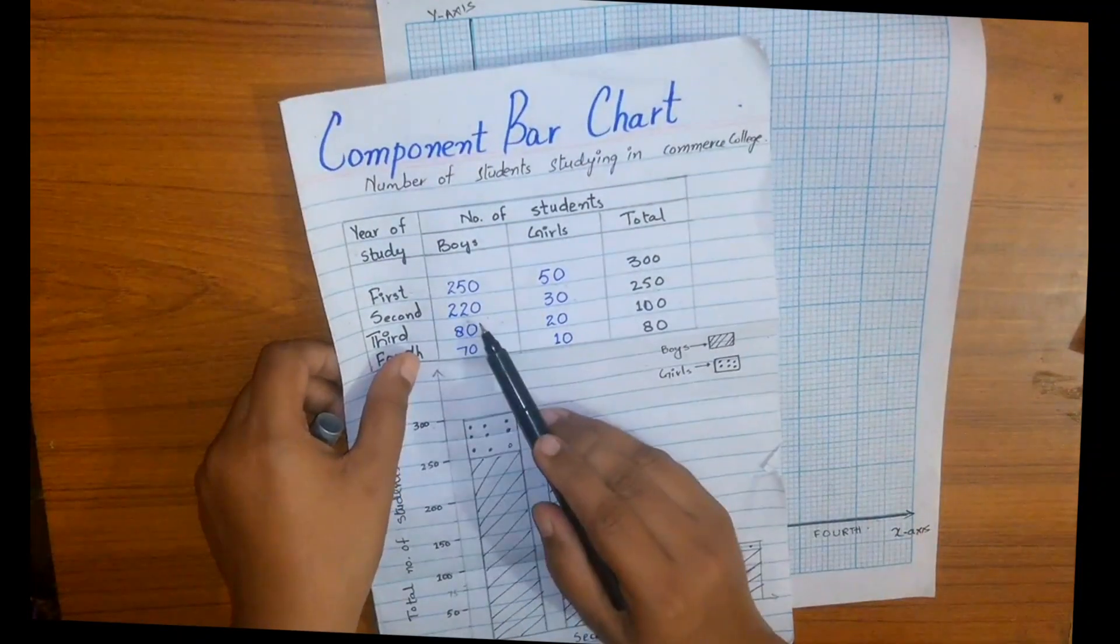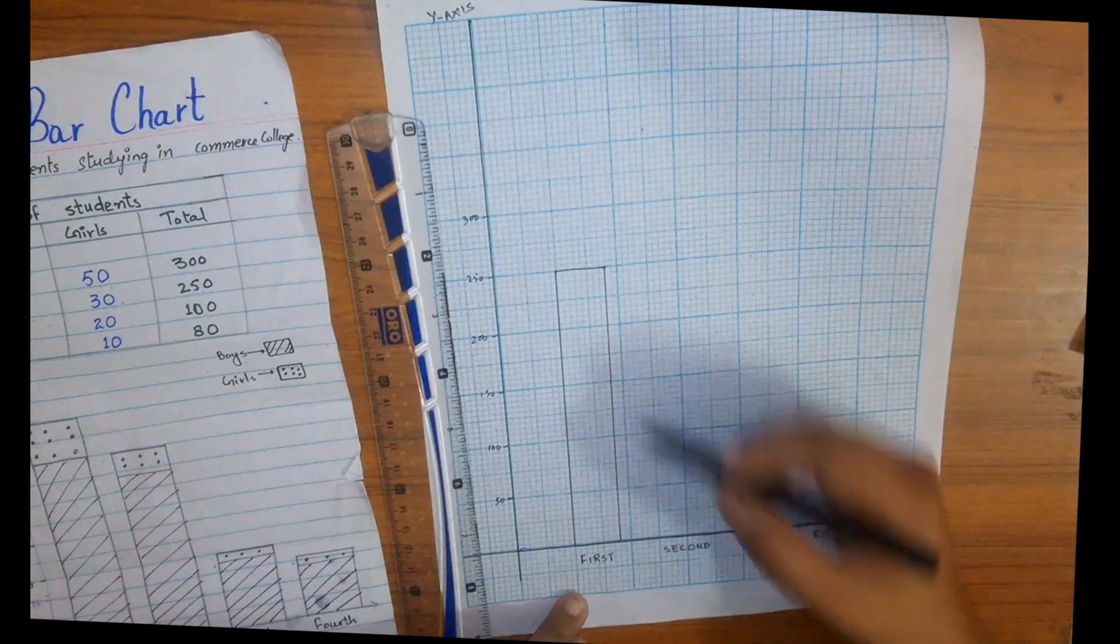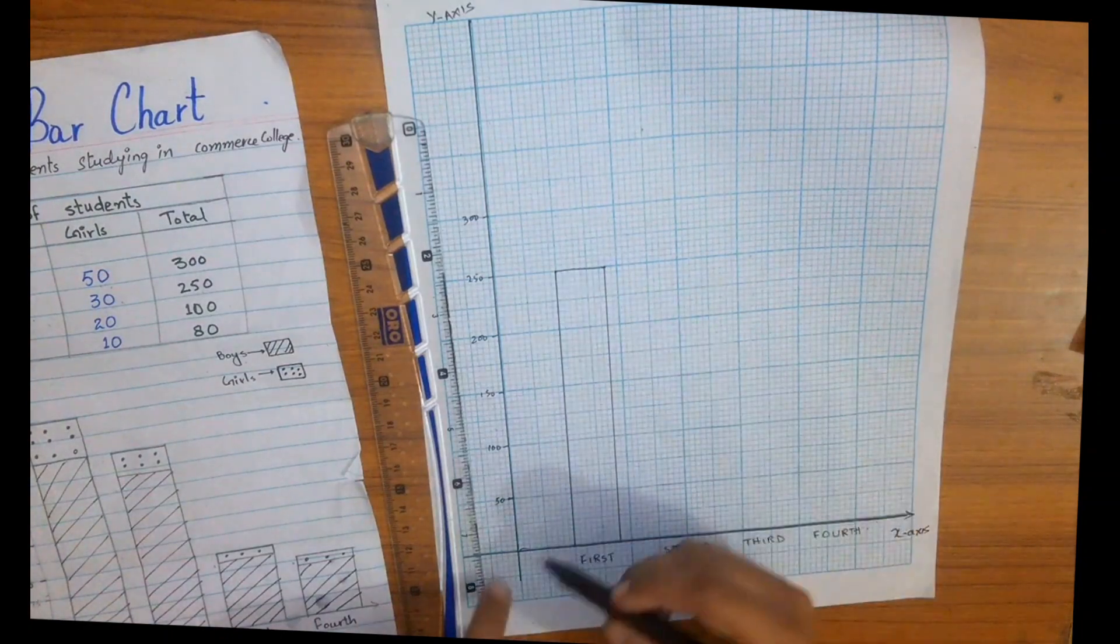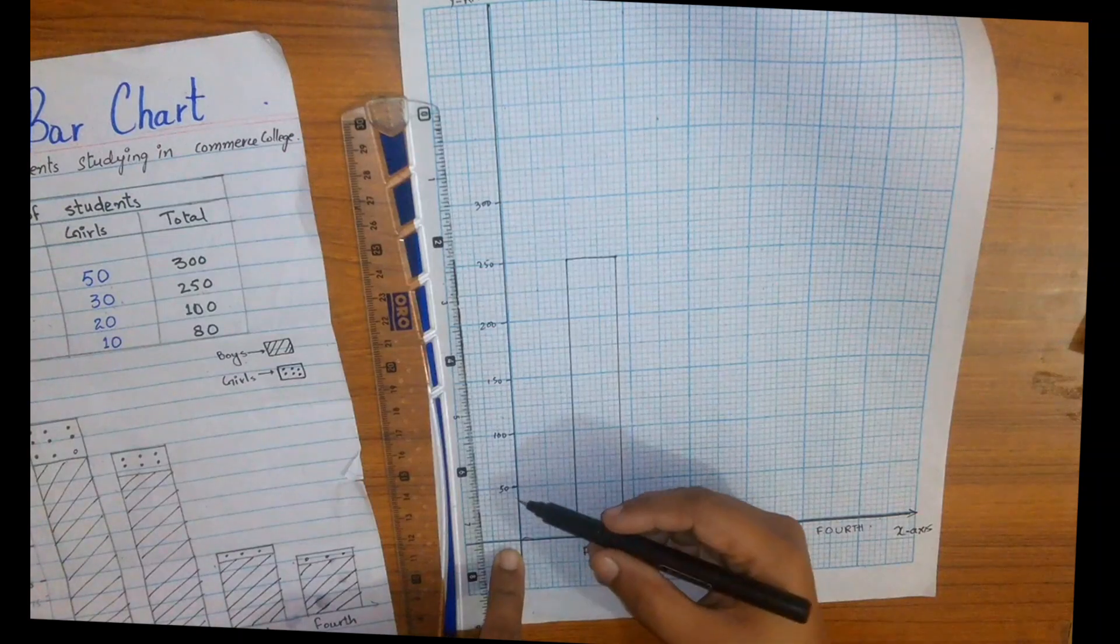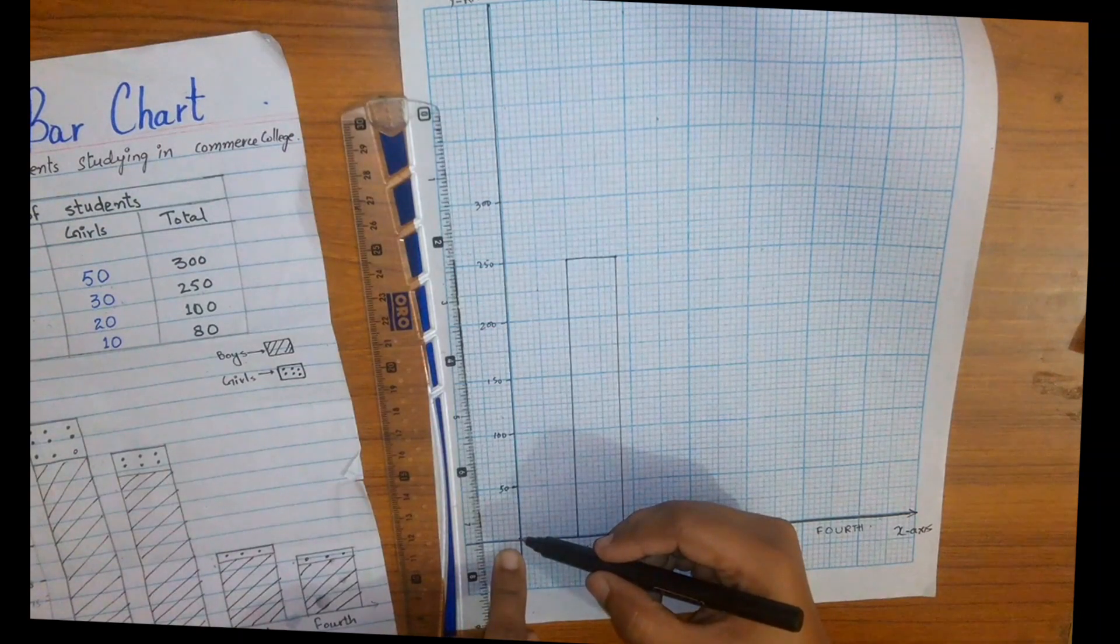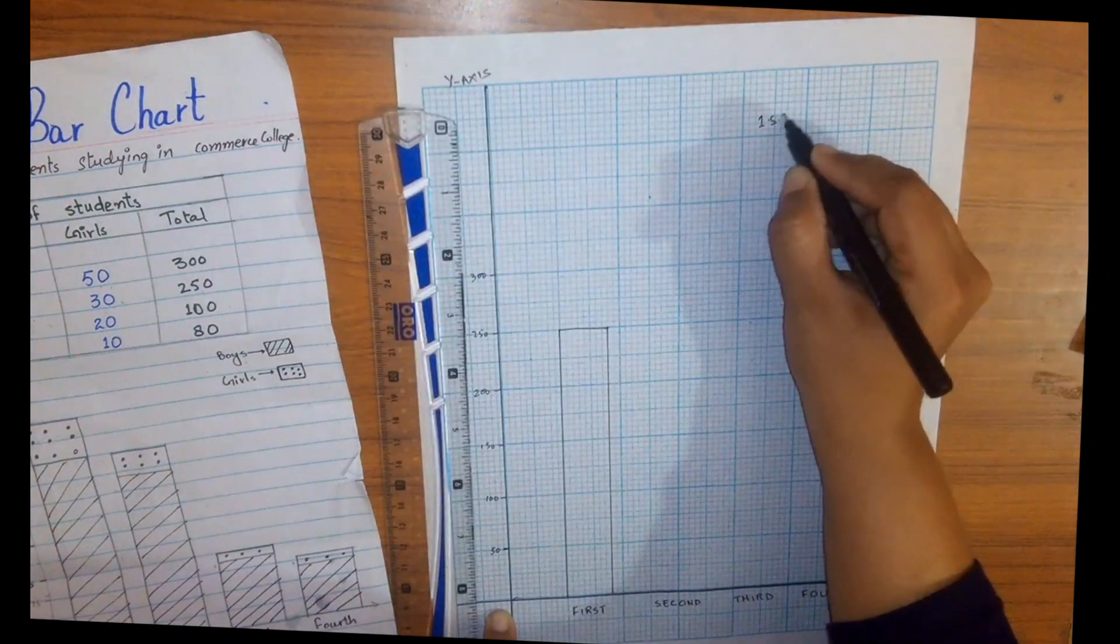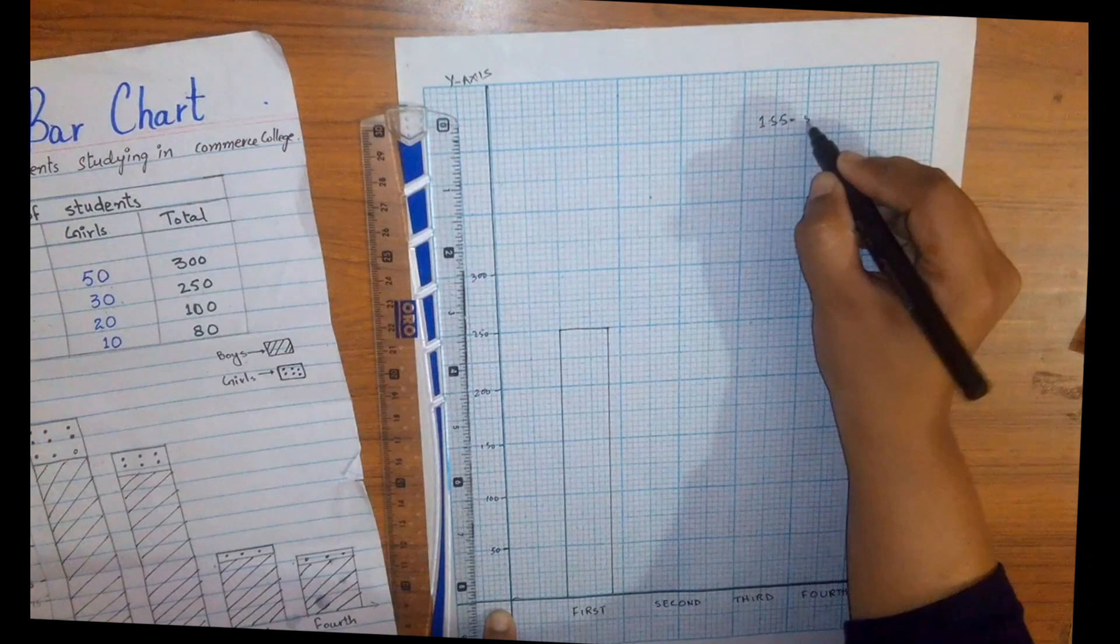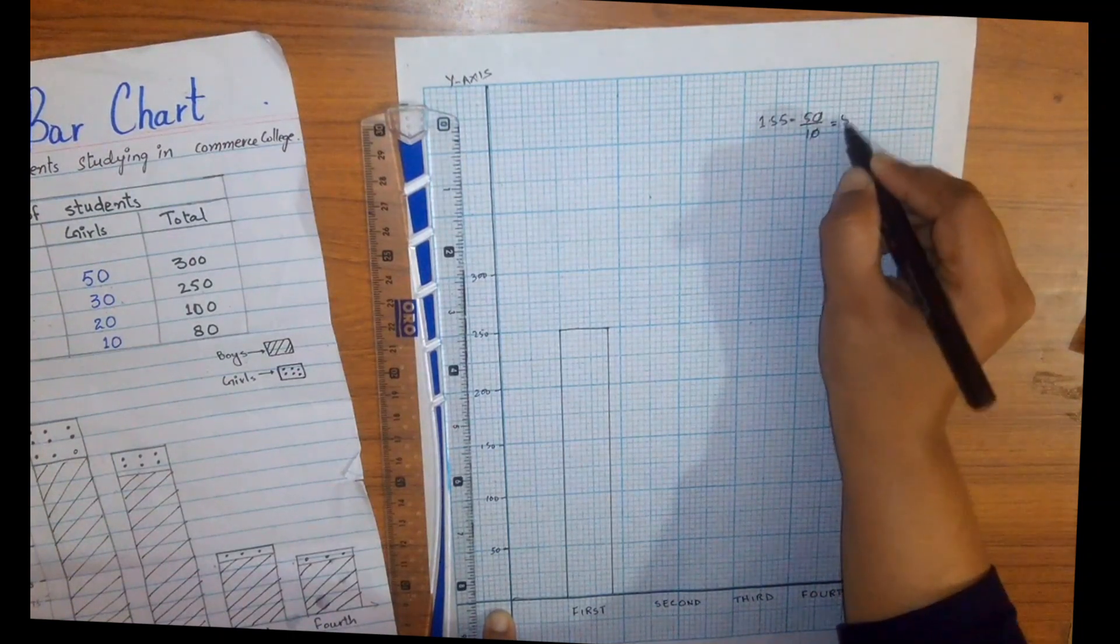In second year the number of boys are 220. 200 is this, and as our 10 small squares equals 50, which means one small square equals 5 units. One small square equals 50 divided by 10, which equals 5 units.